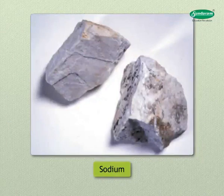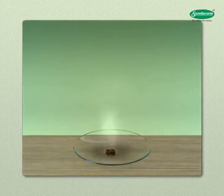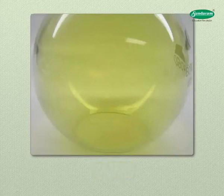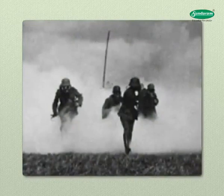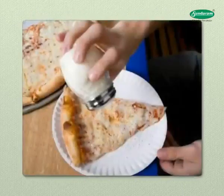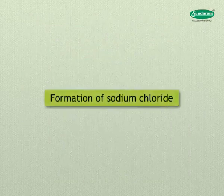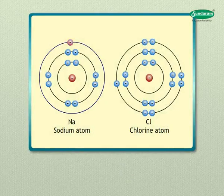Sodium is a silver-colored metal that reacts so violently with water that flames are produced due to formation of hydrogen gas. Chlorine, a non-metal, is a greenish-colored gas so poisonous that it was used as a weapon in World War One. When chemically bonded together, these two dangerous substances form sodium chloride — a compound so safe that we eat it every day.